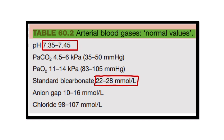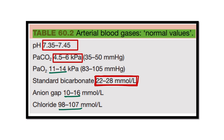To summarize: pH is 7.35 to 7.45, partial pressure of CO2 is 4.5 to 6, and standard bicarbonate is 22 to 28. Other parameters include: partial pressure of oxygen 11 to 14 kilopascals, anion gap 10 to 16 millimoles per liter, and chloride ion 98 to 106 millimoles per liter.